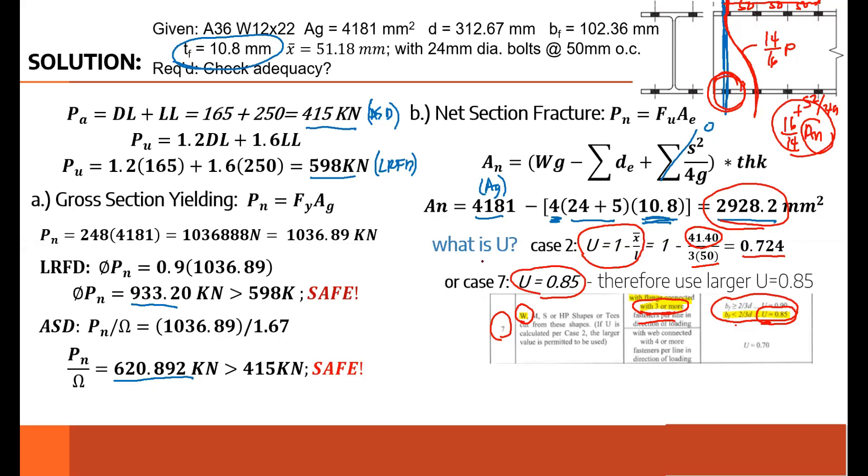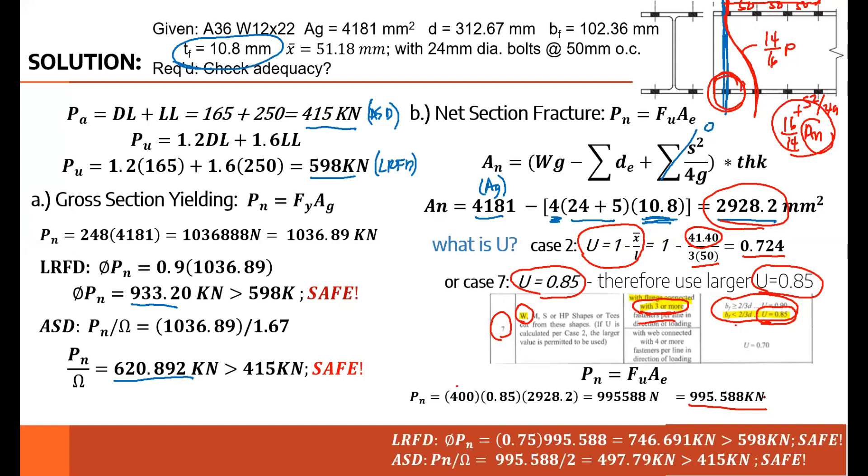So we have two capital U values: 0.724 from Case 2, and 0.85 from Case 7. The code says if you have two values of capital U, which one do we use? The larger. So the larger capital U of 0.85 is what I used. From there, I know capital U now, so I multiply capital U with AN, that's the effective area. Multiply by FU, that's PN, the nominal strength.